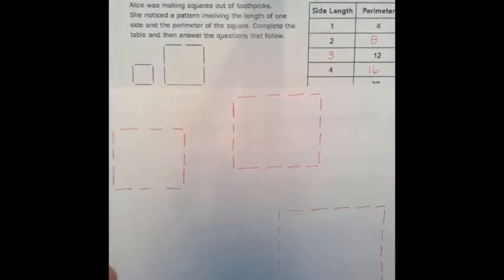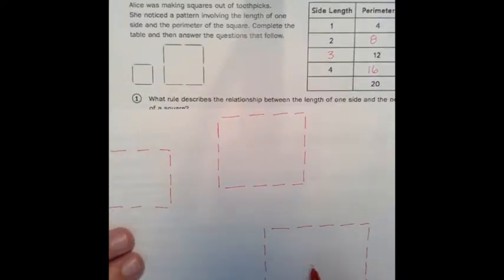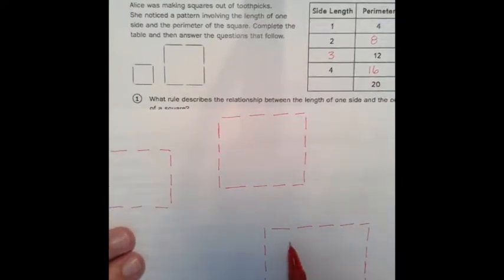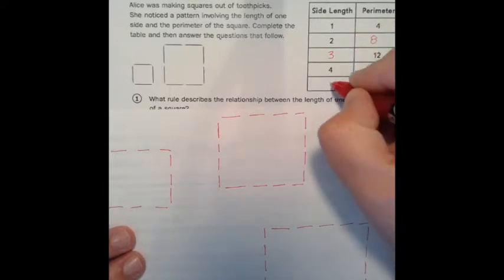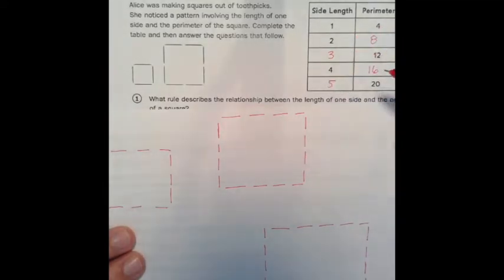And I drew another square down here with a side length of five toothpicks. One, two, three, four, five, six, seven, eight, nine, 10, 11, 12, 13, 14, 15, 16, 17, 18, 19, 20. So the perimeter is 20. That means that each side is five toothpicks long.